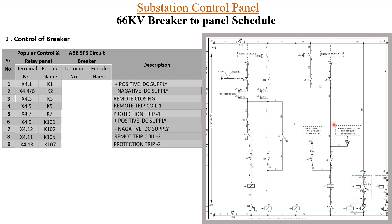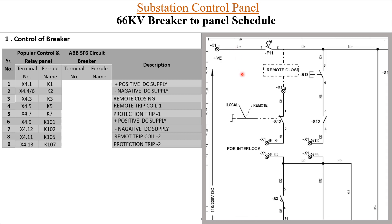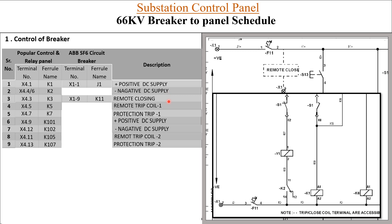In the breaker drawing you can see the remote close circuit and remote trip circuit. For positive DC supply: terminal is X1, number 1, with ferrule name J1. For remote closing: at terminal number 9, ferrule name K11. For negative supply: terminal number 2, ferrule name J2.